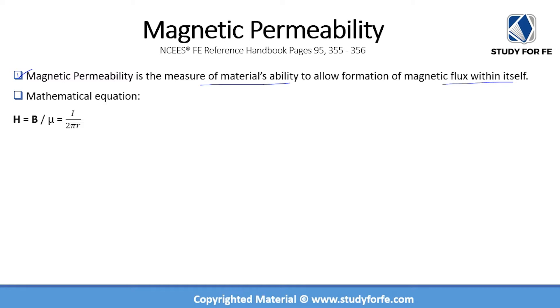The mathematical equation for magnetic permeability is: H = B / μ = I / (2πr), and this is Ampere's law.